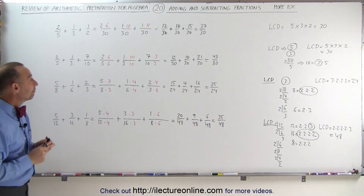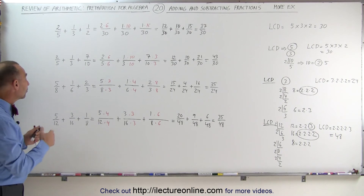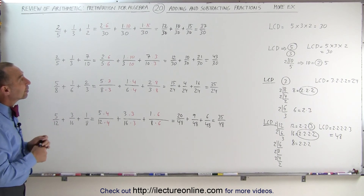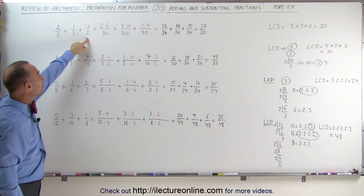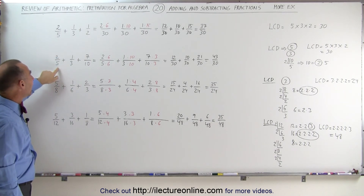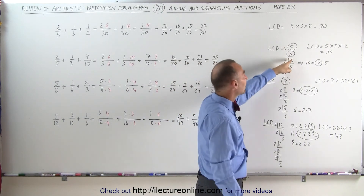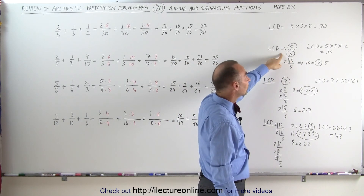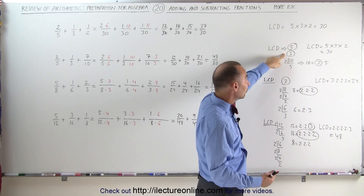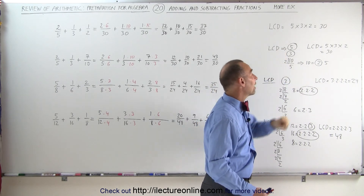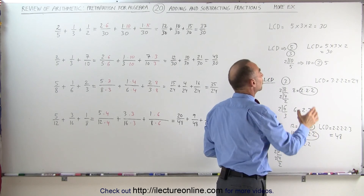And that's how you sum up fractions that have different denominators, especially when you have three of them. You must find the lowest common denominator by either multiplying all denominators together, or by writing each of the denominators as the product of their factors. Find all the prime numbers that occur the most — you don't have to take duplicates. So that's the lowest common denominator.